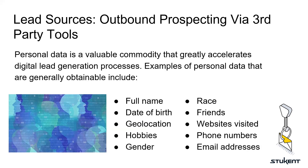Then we have outbound prospecting — getting the personal data of prospects through various lists. There are a lot of email lists being sold, and it is not something that is recommended today. However, there are legal and ethical ways to do it. Just know that it's something where you can get a lot of information about a lot of people really quickly — it's the internet, everybody's data is out there. The textbook goes into a little bit more detail about how this can be worked legitimately.